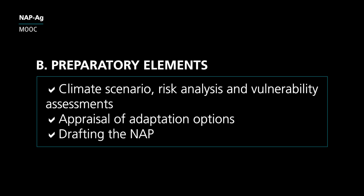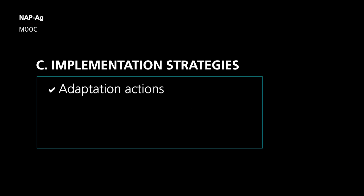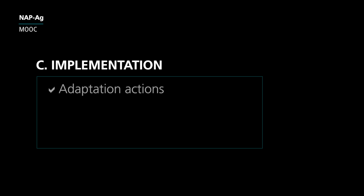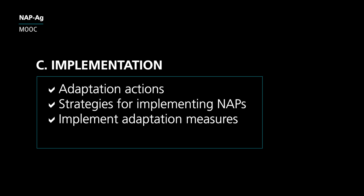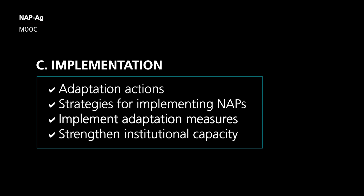After the preparatory element B, element C is about implementation. This does not mean that all previous activities related to stock taking and capacity building have ended — in fact, new information may become available at any point and can be used to enhance the NAP process. During element C, focus shifts to adaptation actions which can be prioritized within the country's long-term planning and implementation process. The questions to answer here are: how do we prioritize adaptation work at the national level, keeping in mind broader development needs? What are the potential costs of implementation, and how can these costs be met? Countries may produce strategies for implementing NAPs, implement concrete adaptation measures, or strengthen institutional capacity and regulatory frameworks.